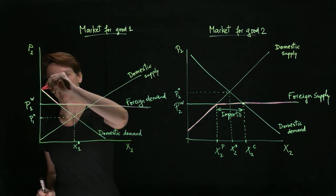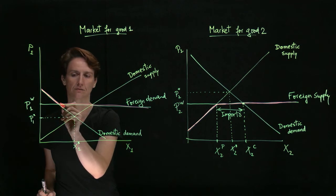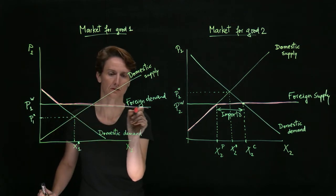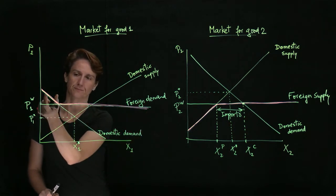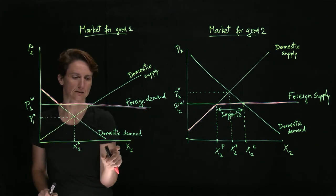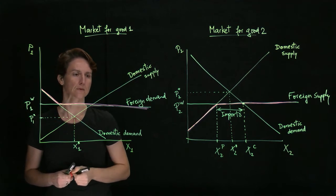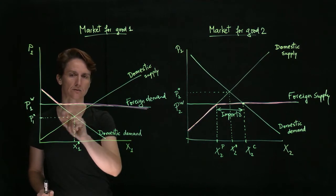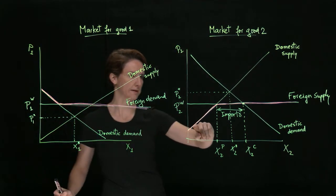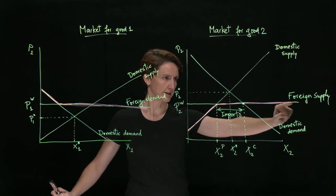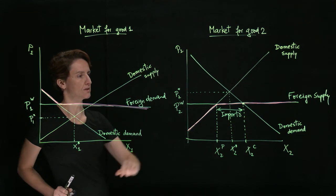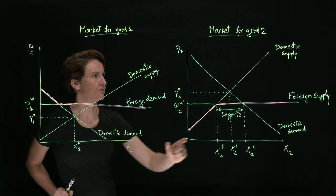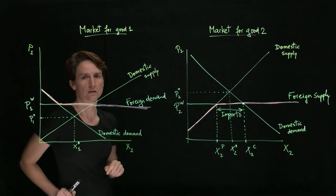So the effective demand curve, from the perspective of domestic producers, has this shape. Okay, some segment that tracks domestic demand, and then a segment that tracks foreign demand. This is similar to the way effective supply, in this other case, for domestic consumers, was made up of domestic supply and foreign supply.